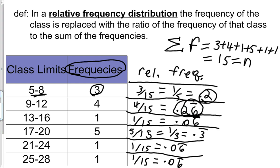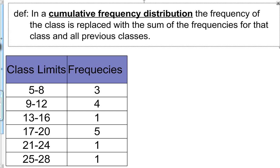Now let's talk about the cumulative frequency. The cumulative frequency is a frequency distribution in which the frequencies are replaced by the sum of the frequency of that class and all previous classes.